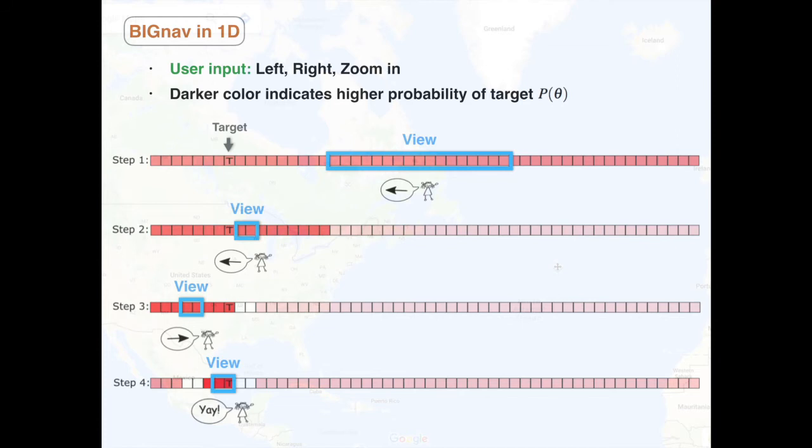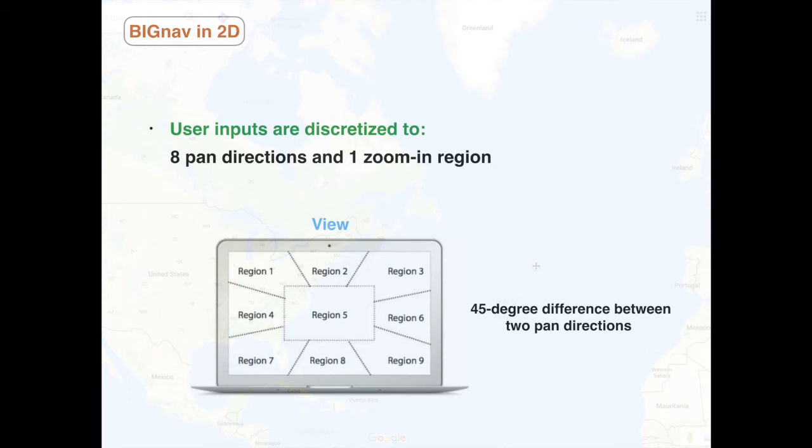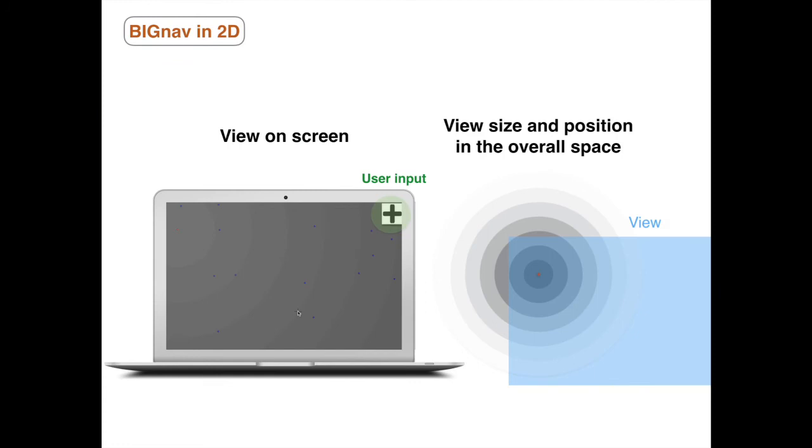In our 2D prototype, we limit the user commands to panning in one of eight directions or zooming in. This reduced set makes computation more tractable. As in the 1D example, Big Nav interprets user input, updates its knowledge, which is represented by the probability distribution of targets, and locates the view to maximize the expected information gain about the user's goal from the next user input.